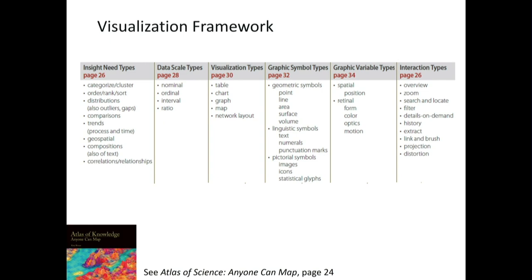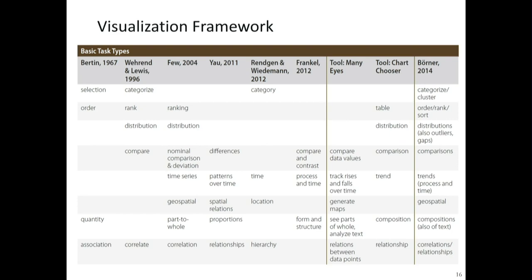Then you have different graphic symbol types you can overlay over base maps. If you have a map of the world, you can overlay points, lines, or areas depending on what you want to visualize. You can also overlay linguistic and symbolic symbols — and that's where this big table comes in. You also have graphic variable types to color, shape, and size-code geometric symbols, and ultimately different interactivity types to further drill into the data.